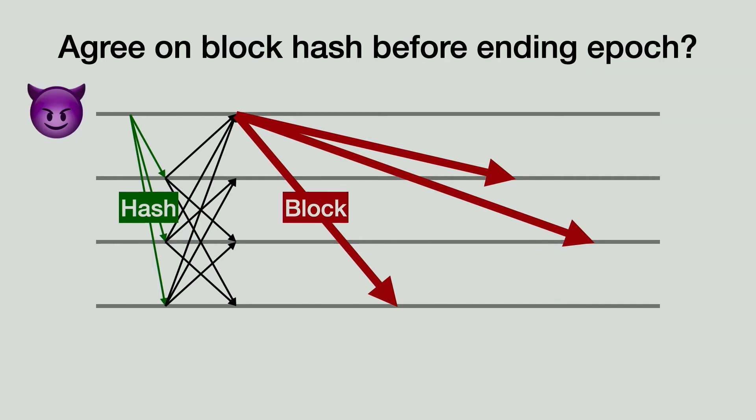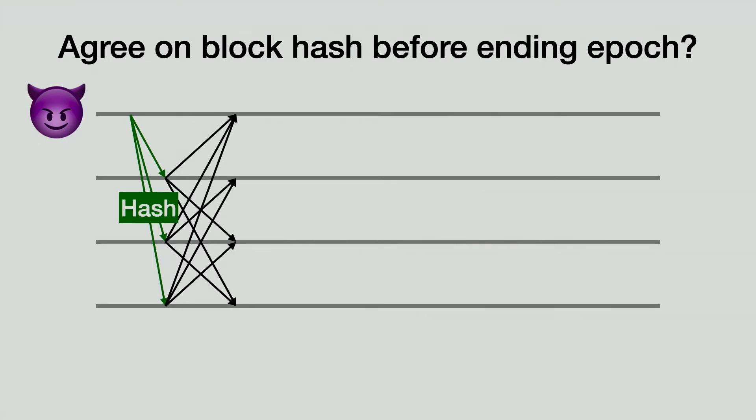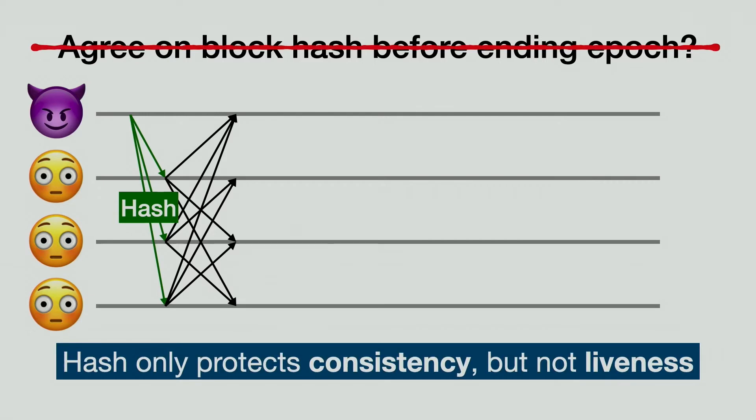Sadly, there's a problem. The node proposing the block could be malicious and may refuse to provide the block when a node tries to download it. No one else has the block either. They only have the hash. The append-only log will stop growing because of a missing block, and the system loses liveness. This problem shows that learning the hash alone is not enough for nodes to safely agree to append a block. The hash does protect the consistency of the log, meaning that nodes will not append blocks with different hashes, but it does not protect the liveness, as we just saw.